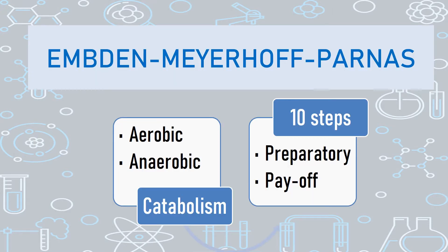EMP pathway stands for Emden-Meyerhof-Parnas pathway. Those are the three scientists who elucidated this pathway, and we have taken the first letters of each of their names — that is why it is called the EMP pathway. This pathway is one of the common pathways found in most organisms, and it is the first step of the breakdown of glucose.